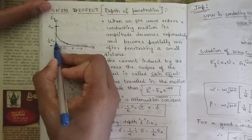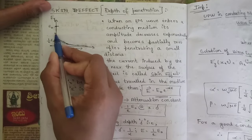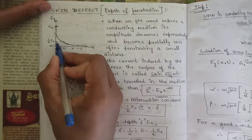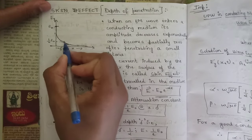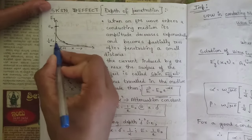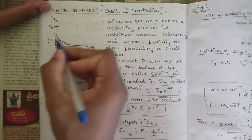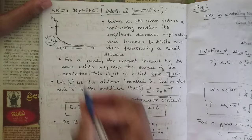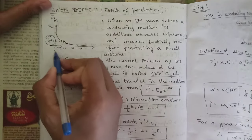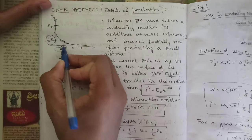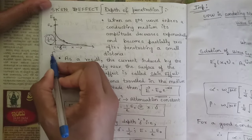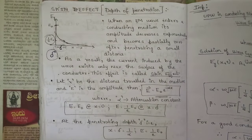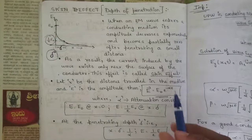The point where the decrease happens exponentially — where the divergence takes place from the x-axis as well as the y-axis — this point is called 1/e times E-naught. The length here is called the depth of penetration and it is represented by δ (delta/dow).